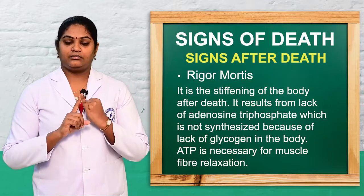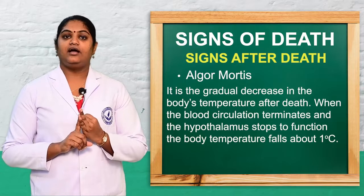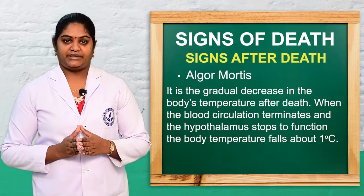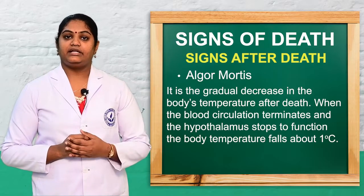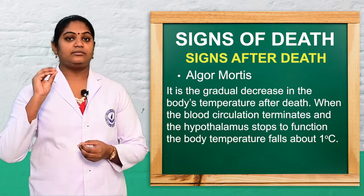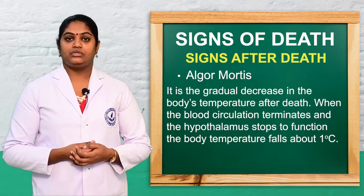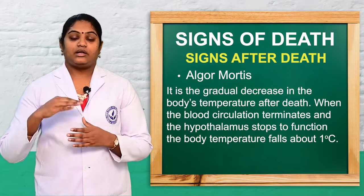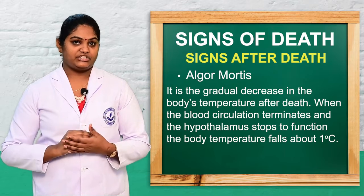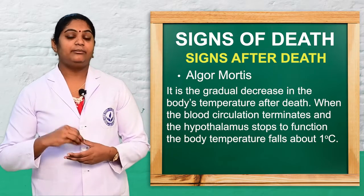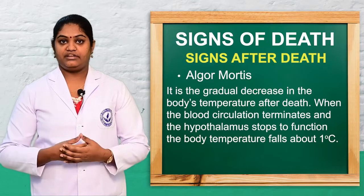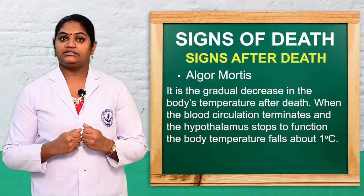The second is algor mortis, which is the gradual reduction of body temperature. Body temperature is normally regulated by the hypothalamus. When blood circulation stops, the function of the hypothalamus stops as well. This leads to a decrease in body temperature of 1 degree Celsius per hour until it reaches room temperature.